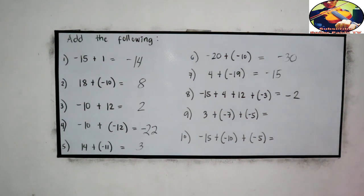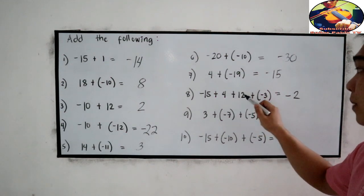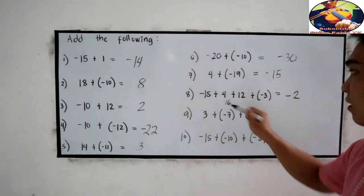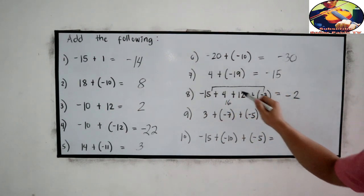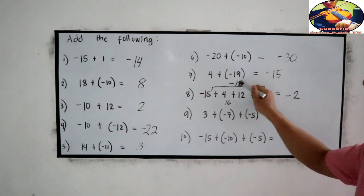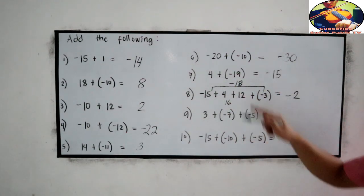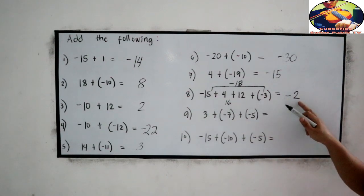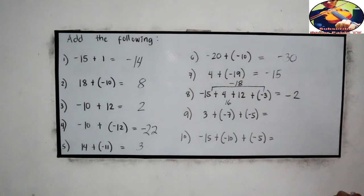Or the technique is combine like terms. Positive 4 plus 12, this is 16. Then negative 15 and negative 3, negative 18. One negative and one positive, so subtract. 18 minus 16, which is 2. Absolute value 18 is greater. So negative 2.